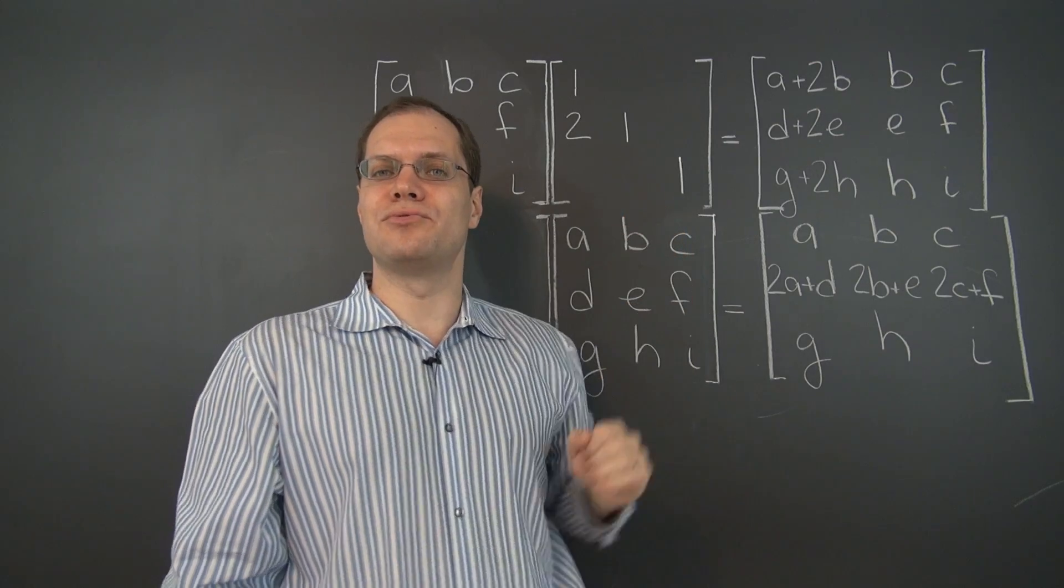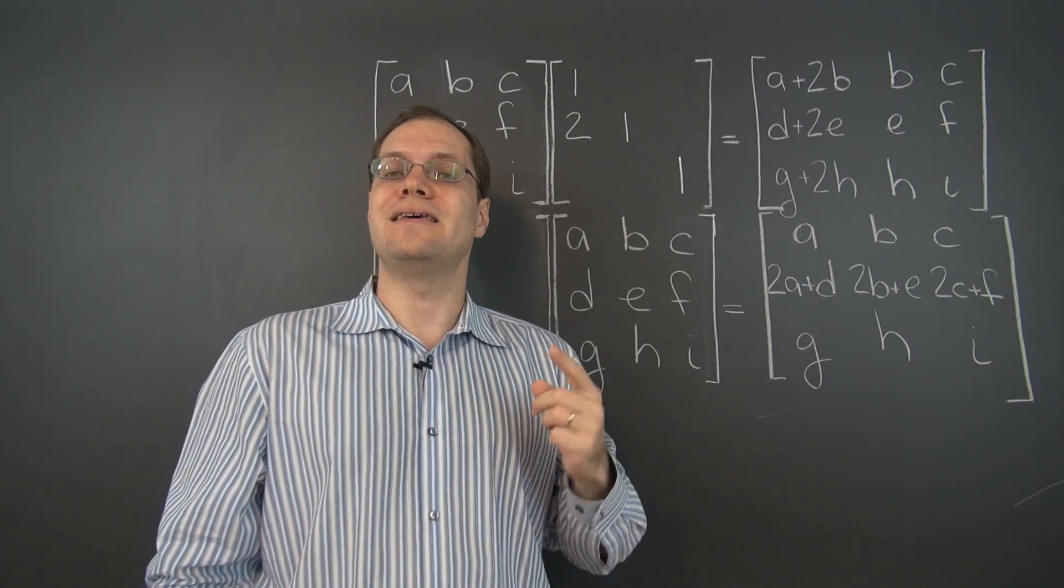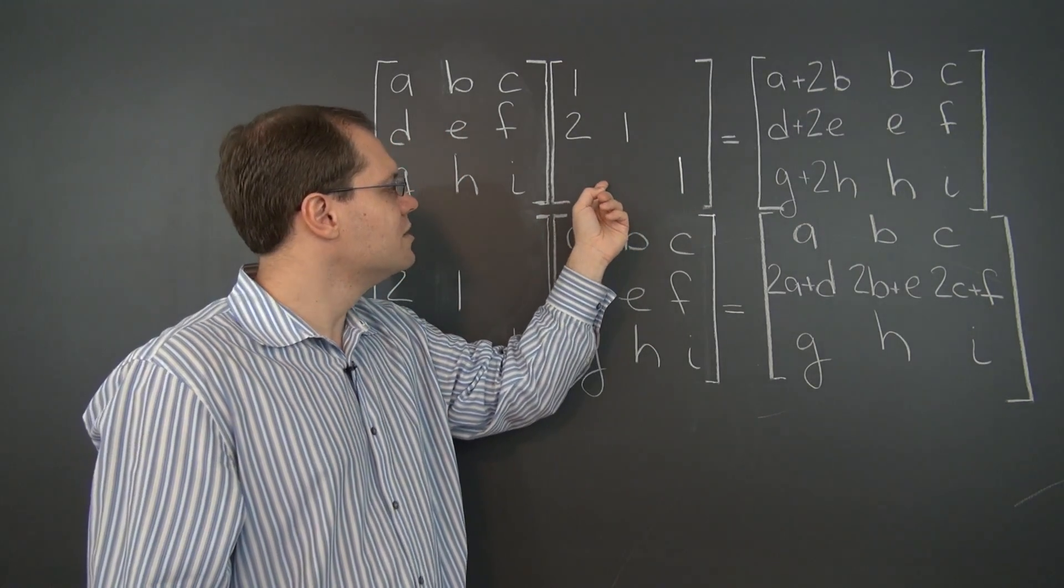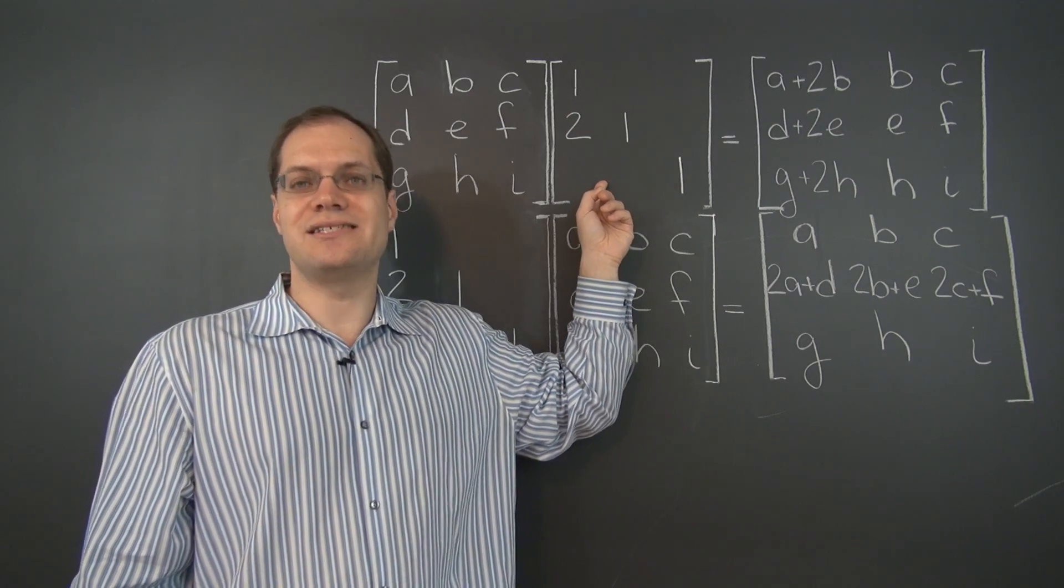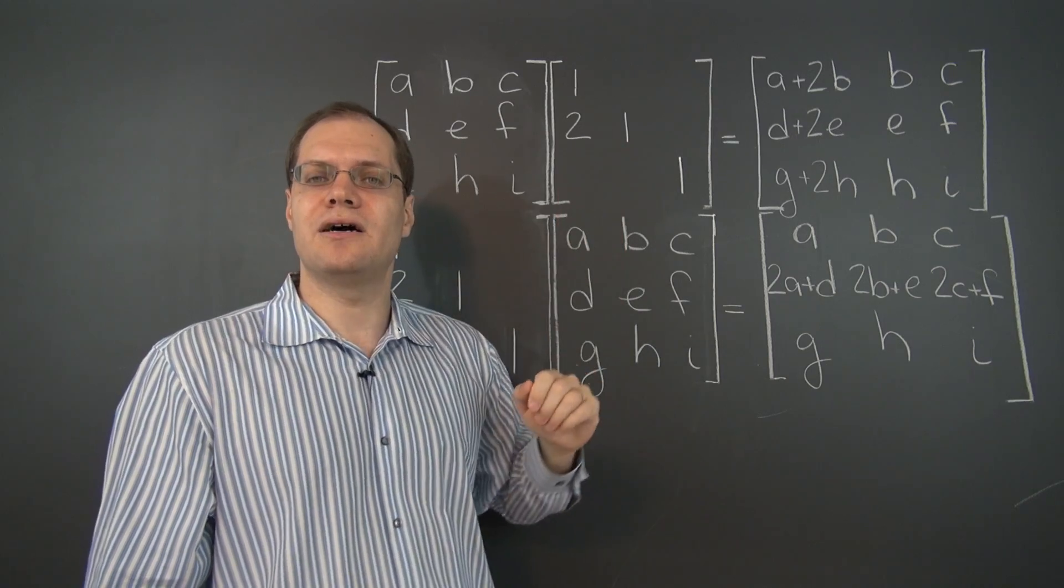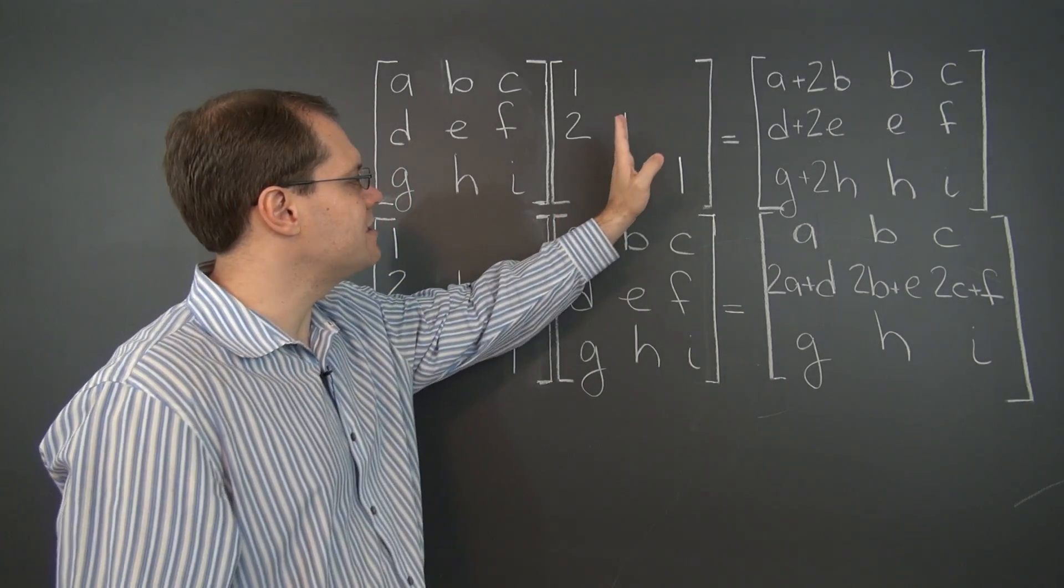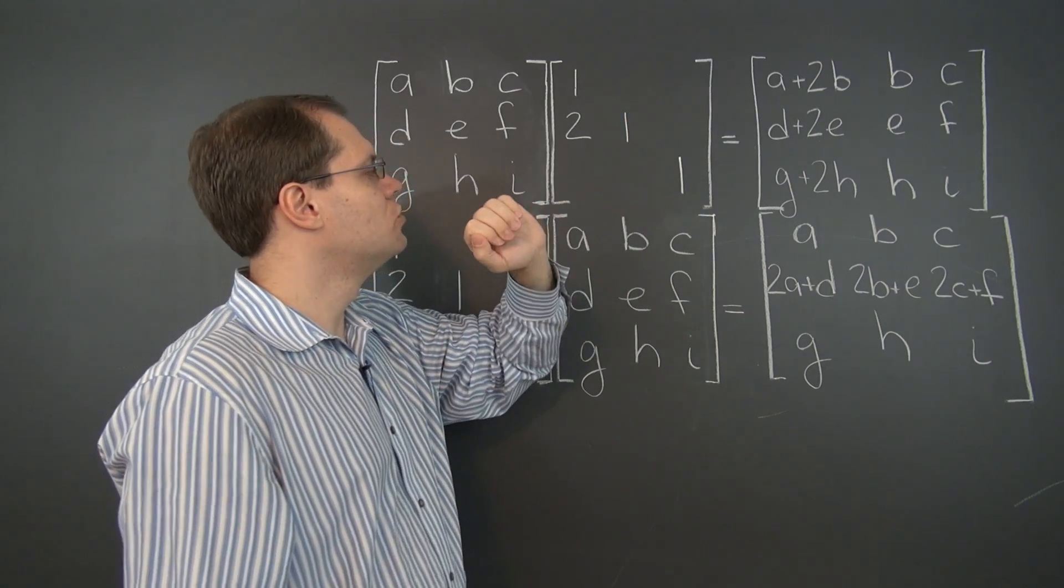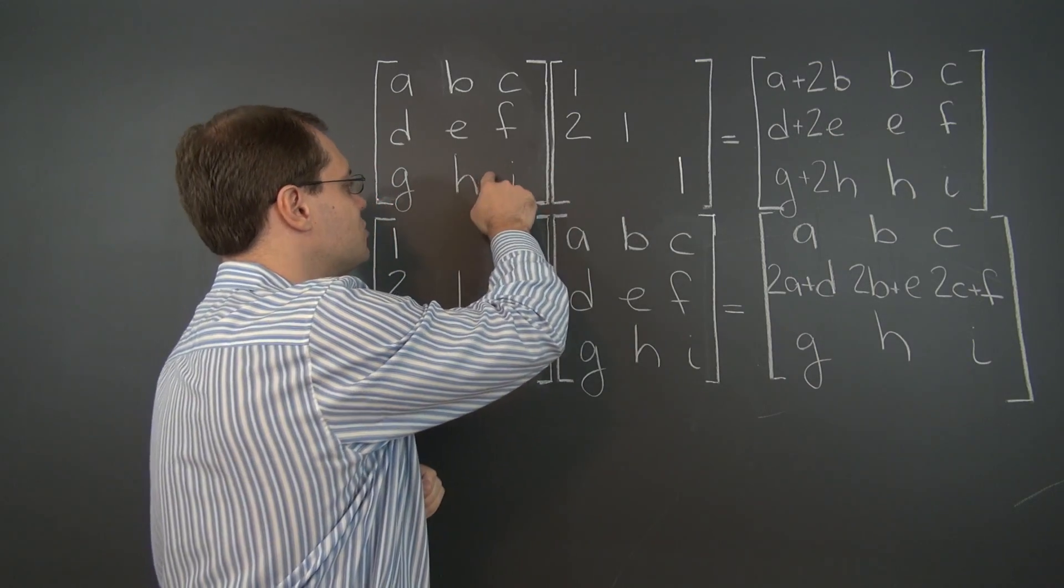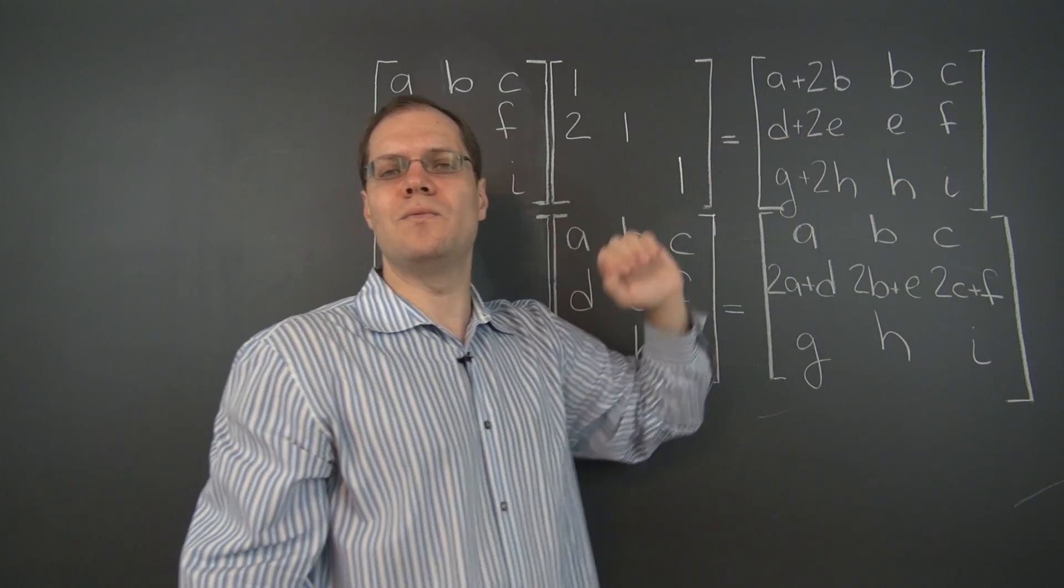Now, does this operation ring a bell? Did we hear about this operation recently? Yes, that's precisely the operation that we mentioned when we were designating this matrix as an elementary matrix. This matrix is elementary because, from the column's perspective, it's obtained from the identity by adding 2 of column 2 to column 1.